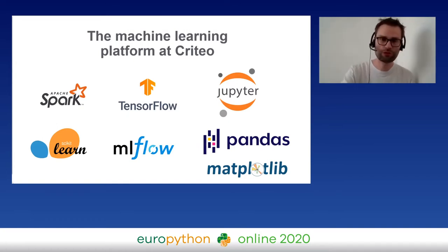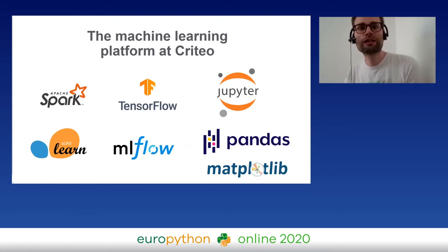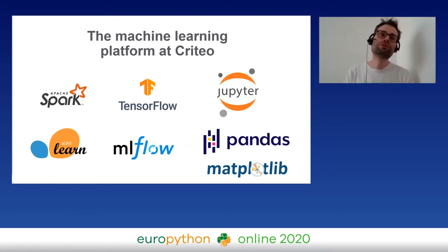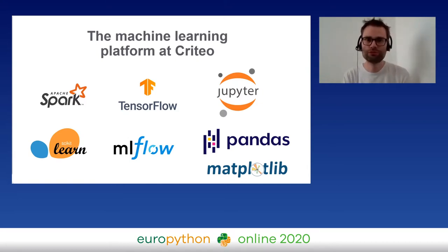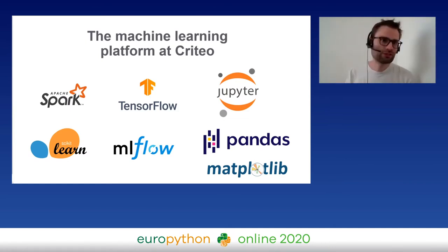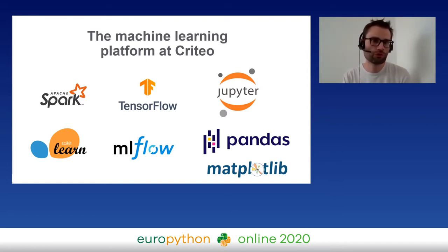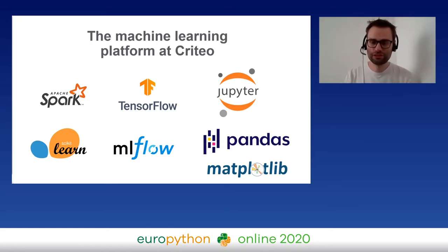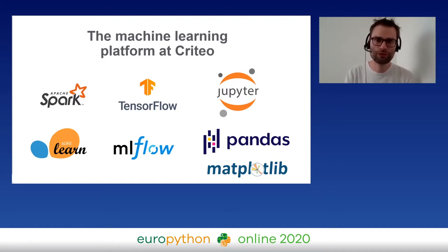These are the tools we deploy on our machine learning platform. We are big users of Apache Spark — we use it for analytics and data processing, and we have our own ML models built into Apache Spark. We use TensorFlow for deep learning, scikit-learn for smaller models, Jupyter and JupyterHub for experimenting, Pandas and Matplotlib for visualization, and MLflow for the whole workflow. We are also contributors to MLflow.